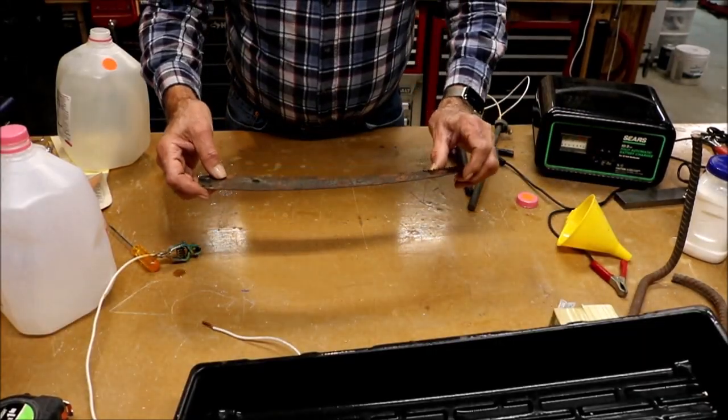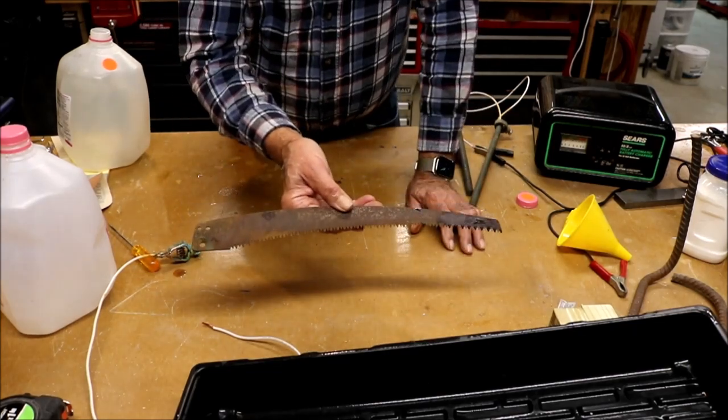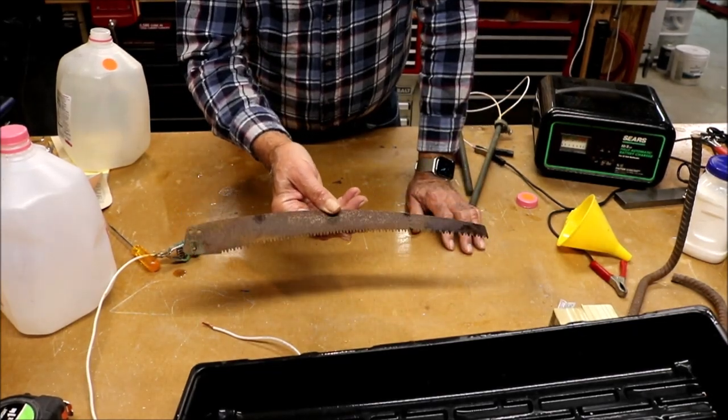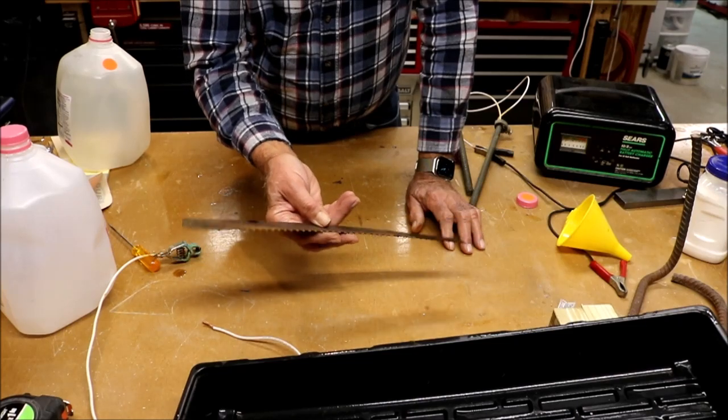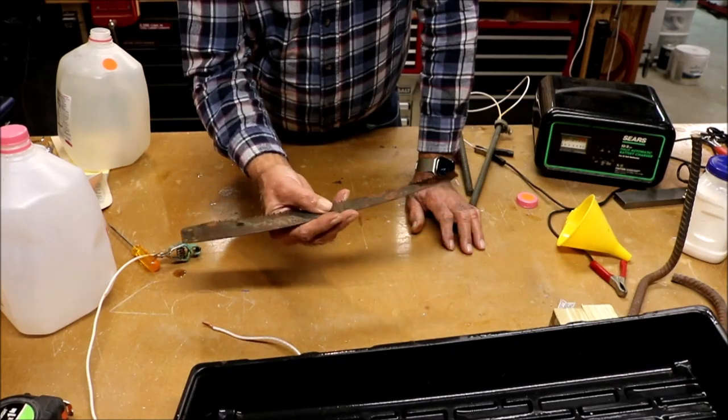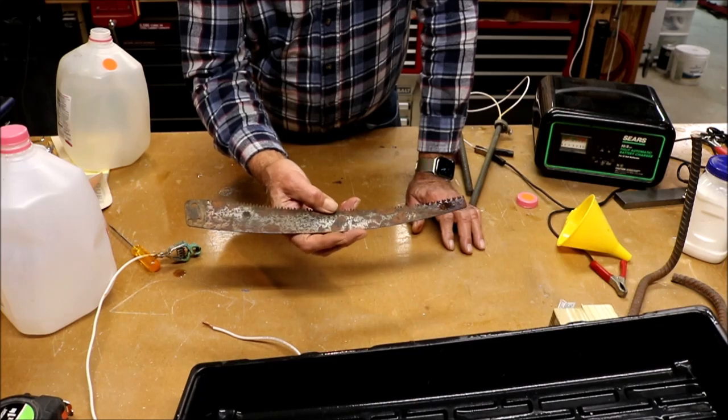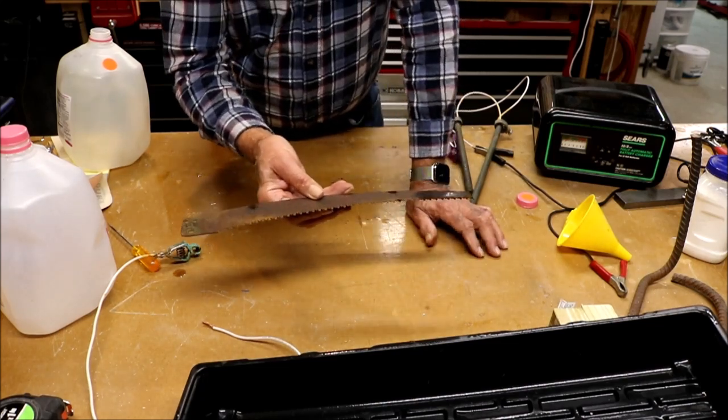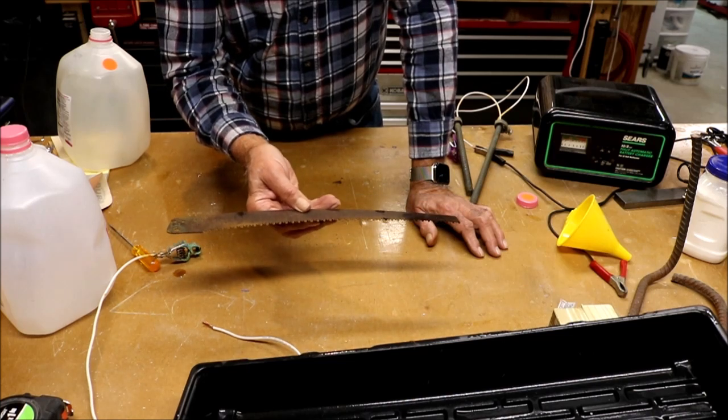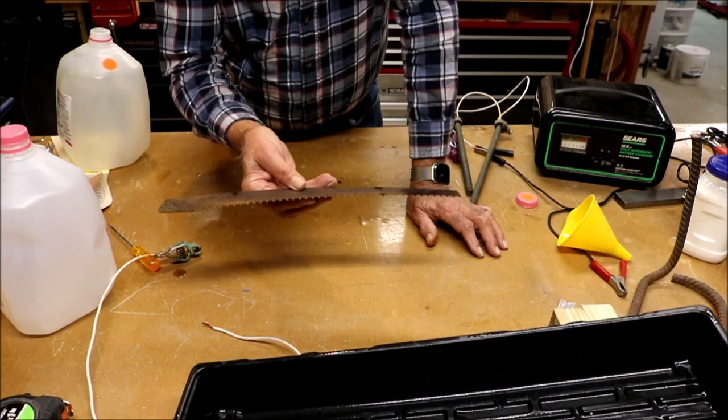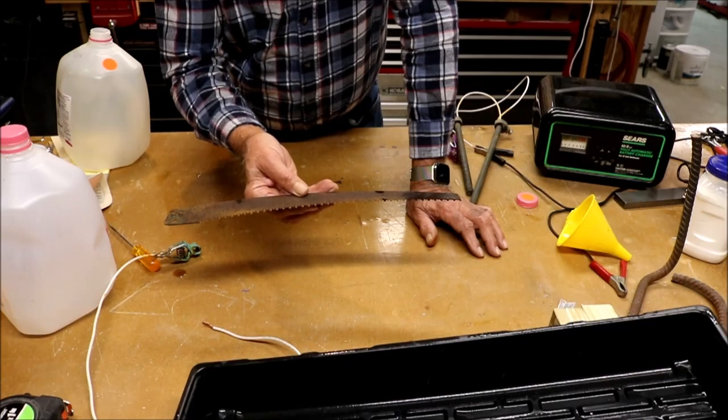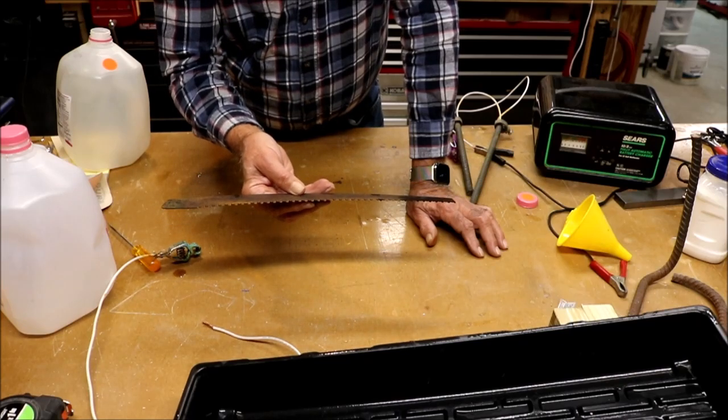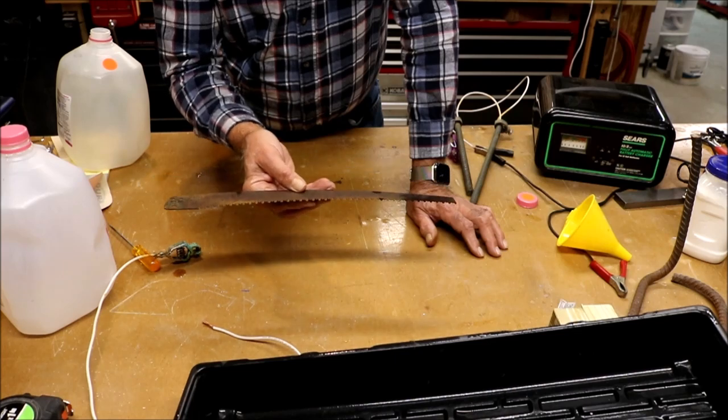So here's what the blade looks like after approximately two hours in the bath. And I can see it's a lot better than it was, but there's still some spots of rust on it. And I think I did not leave it in the solution long enough. And I couldn't really tell if the bubbles were stopping because it's not a glass tray. It was a plastic tray. I couldn't see in. So I'm going to try this again.